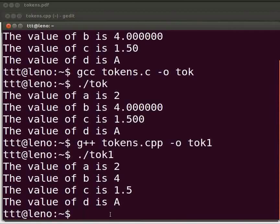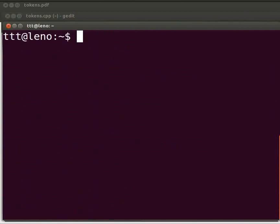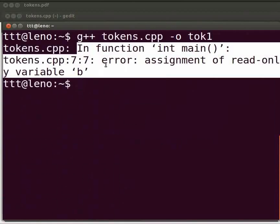Let me clear the prompt. Now compile as before. We see an error at line number 7 in our tokens.cpp file. Assignment of read only variable b. Come back to our program.